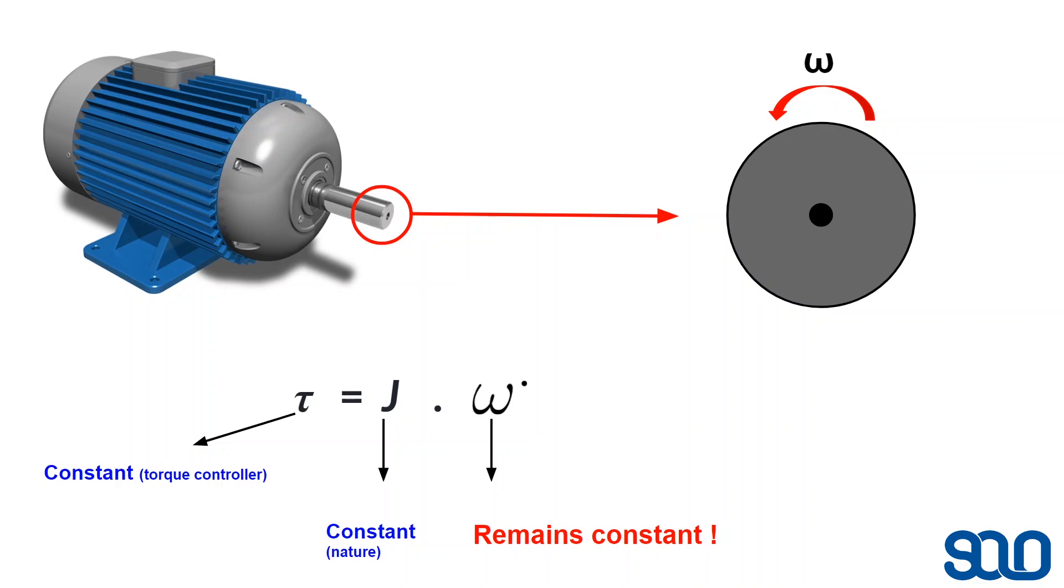What I'm seeking to explain here is when you are controlling the torque, it means that you're going to keep the torque constant. So the first term on the left is going to be a constant value. J, which stands for the inertia and depends on the mechanical design of the motor, will also be something constant because it's the nature of the motor after it's produced.